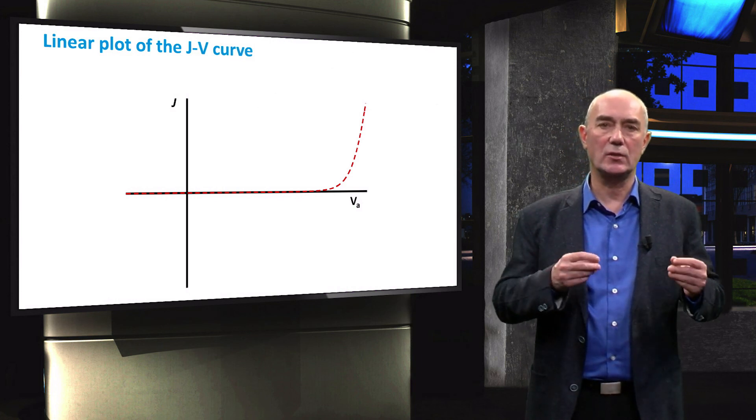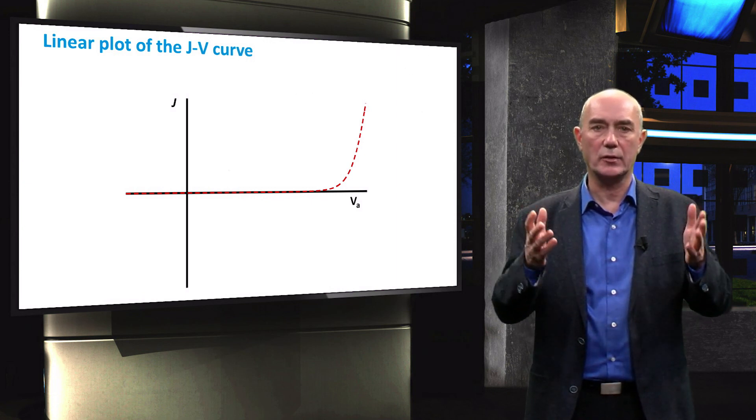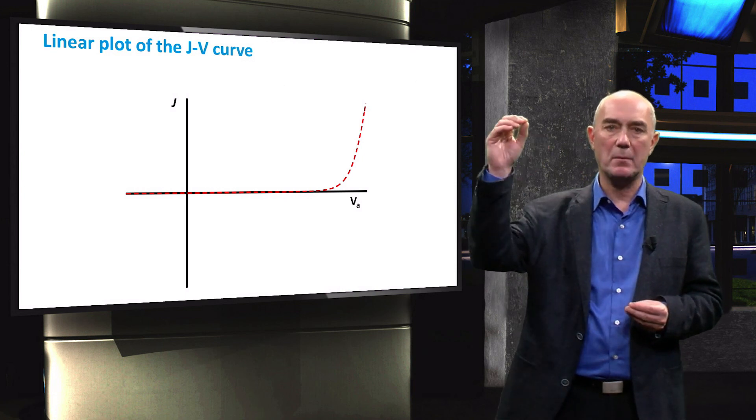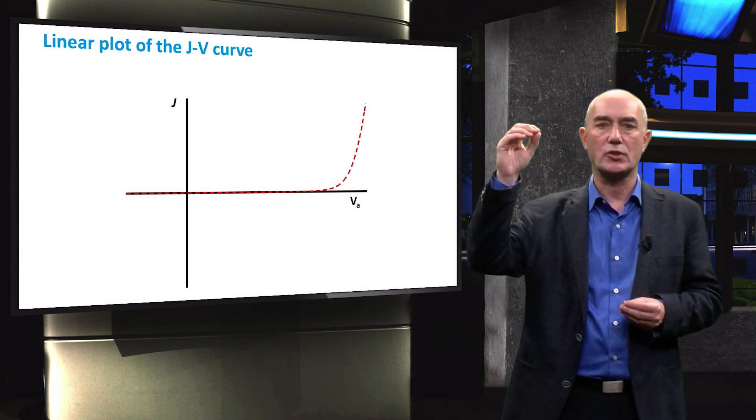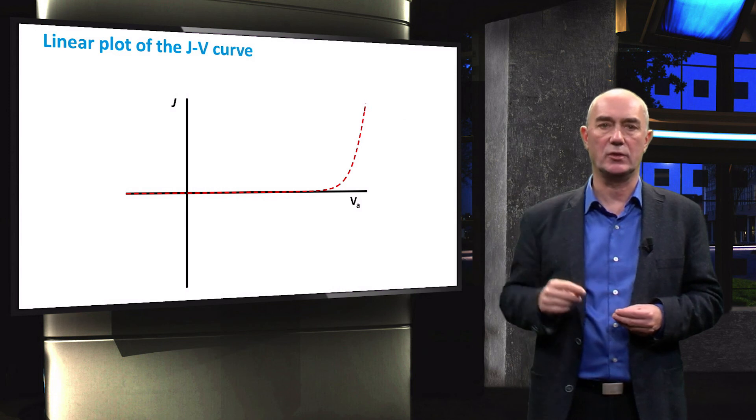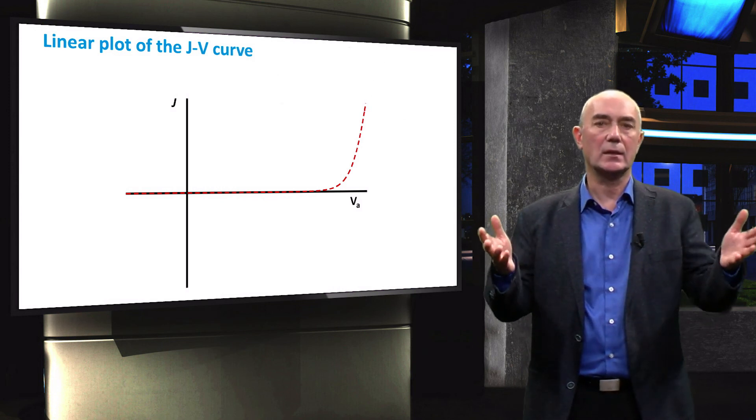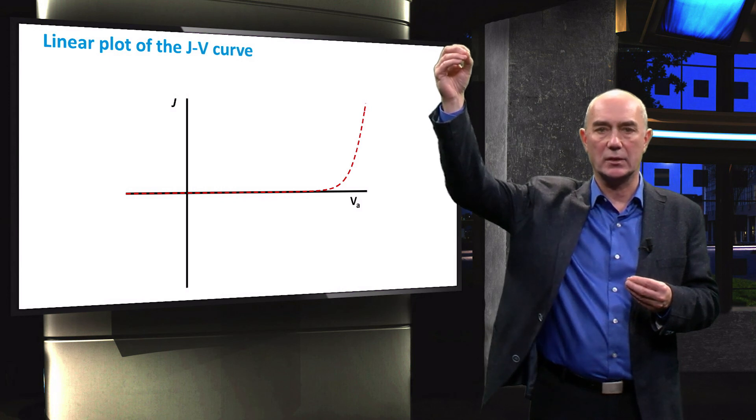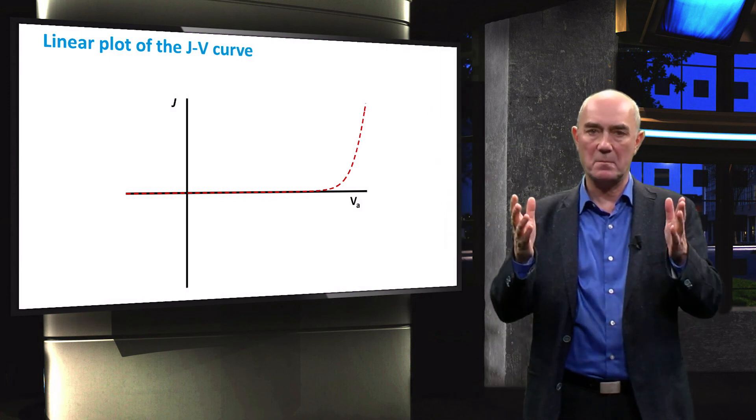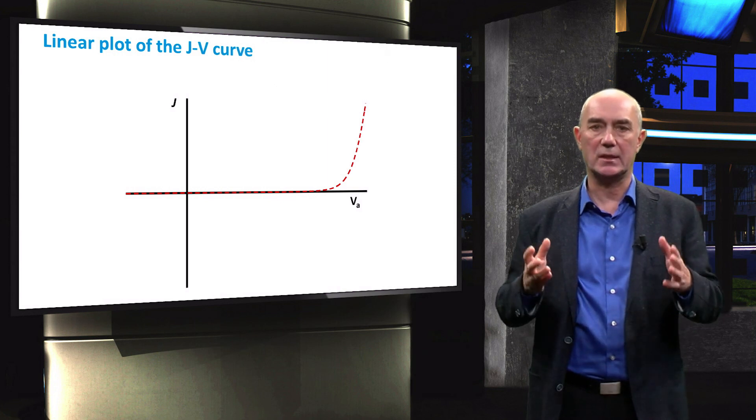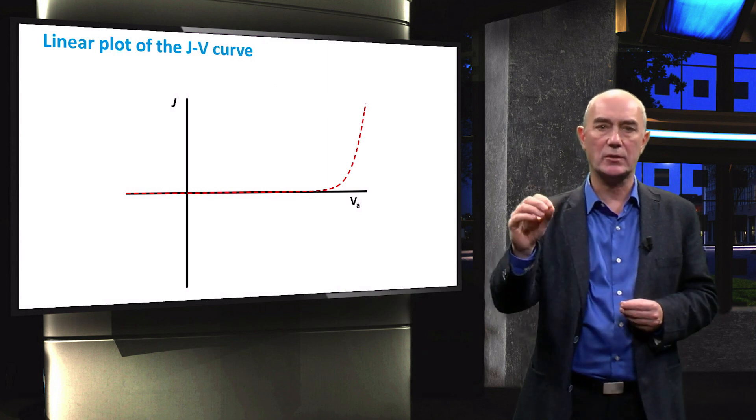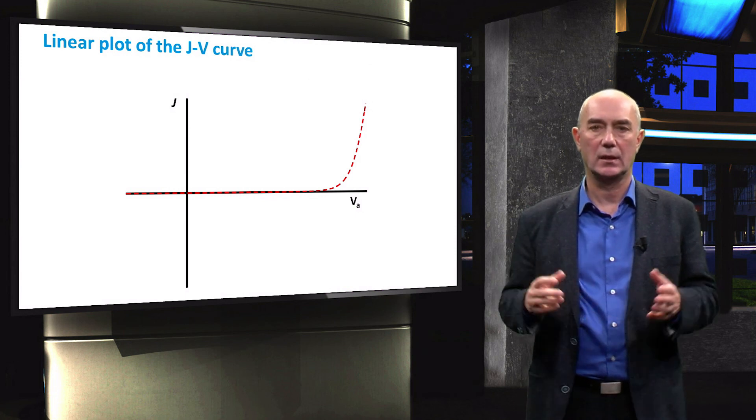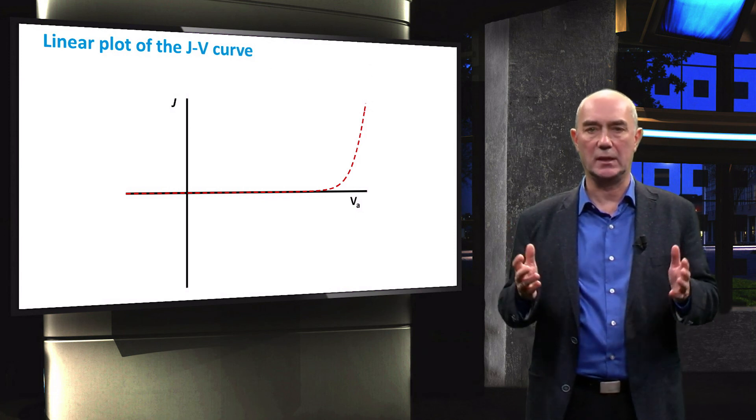This is because J0 is usually on the order of femto amperes per square centimeter, compared to the milli amperes per square centimeter shown in the forward bias region. You can clearly see the exponential increase in the forward bias region. This exponential shape will become very important when we start looking at how this curve changes when the diode is under illumination. This will be the topic of the next set of videos.